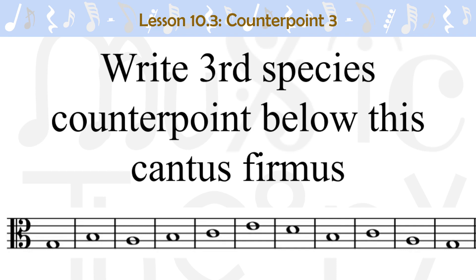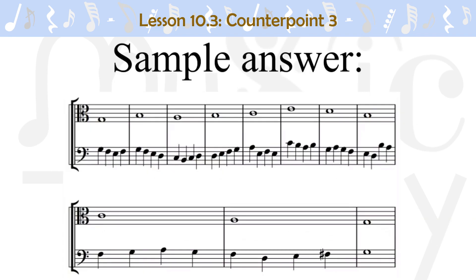Write third species counterpoint below this Cantus firmus. Sample answer shown. The first measure contains four quarter notes and starts with a unison. The second and fourth beats are dissonant passing tones. The next measure has a dissonant passing tone on the second beat. The next measure has a dissonant lower neighbor tone with an interval of a seventh on the second beat. The next measure has a dissonant passing tone on the third beat. The measure after that contains all consonances. The measure after that has a dissonant passing tone. The next measure has a dissonant upper neighbor tone on the second beat.